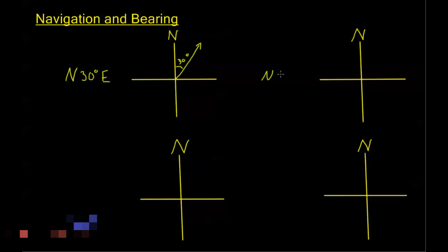Similarly, north 50 degrees west would be starting from north and then going in the direction 50 degrees west.